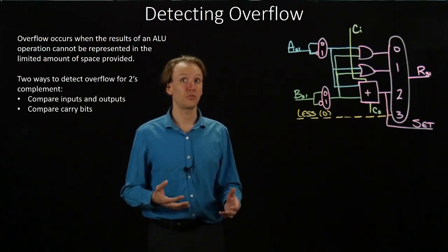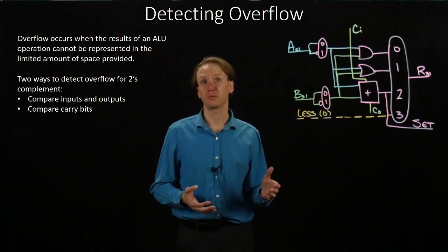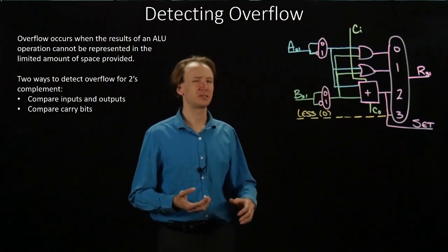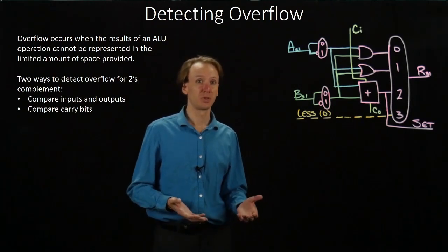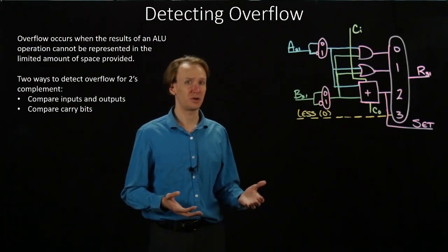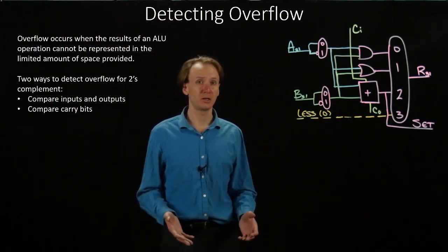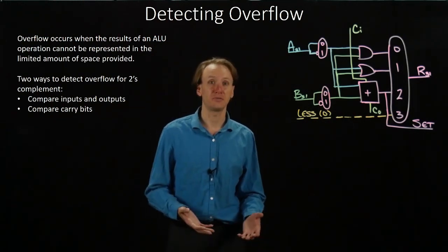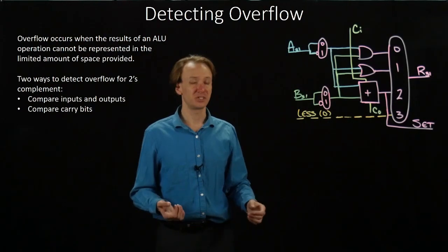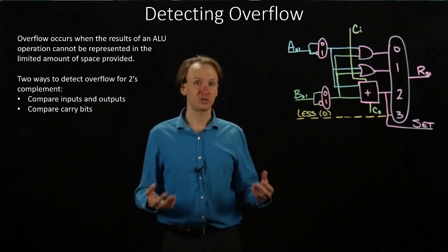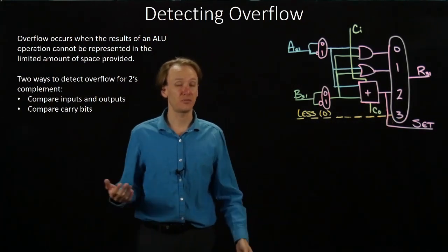There are two ways to detect overflow for two's complement. Overflow occurs when we have two positive numbers that come in and the result ends up looking like a negative number. When we have two positive numbers, the most significant bit is zero. But if we add two really large positive numbers together, we might get the most significant bit changed to a one, in which case the number would look like it's negative. So we could detect this by looking at the two inputs coming in, seeing if they're both positive or both negative, and then checking to see if the result coming out of the adder is the same sign or not. If they're different signs, then we have overflow.